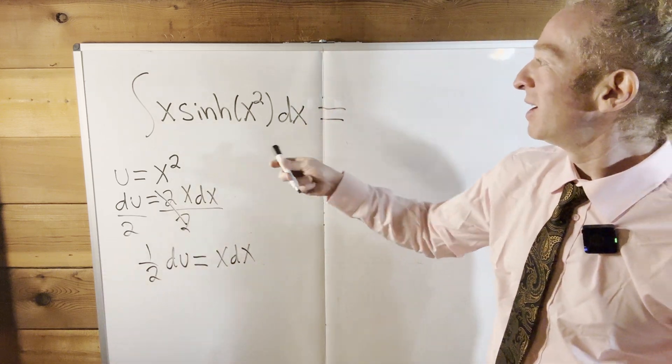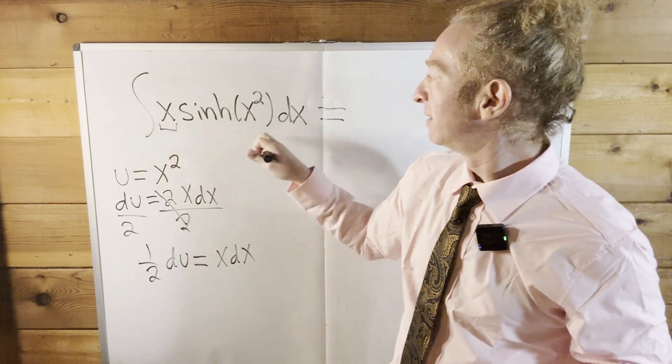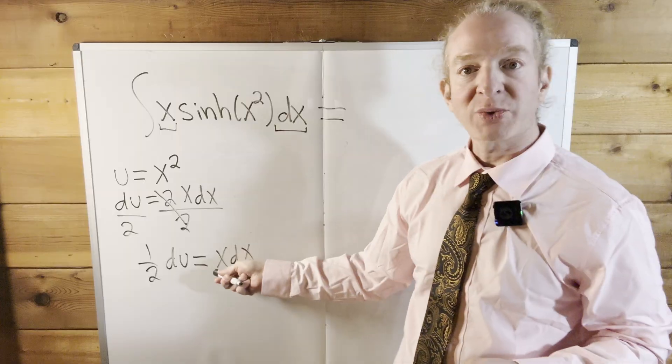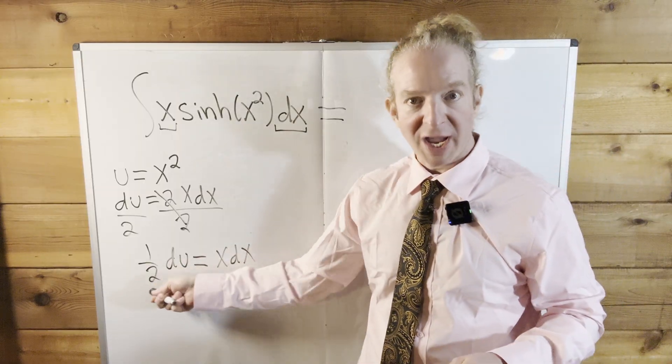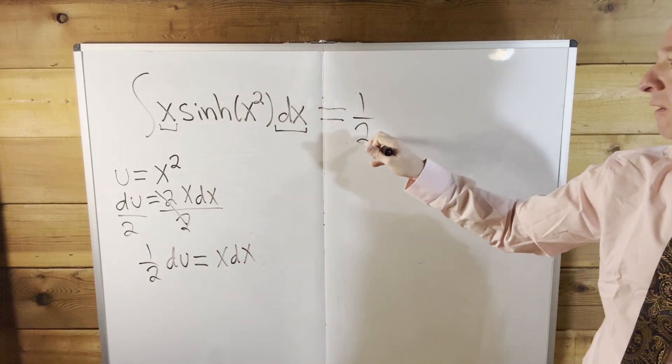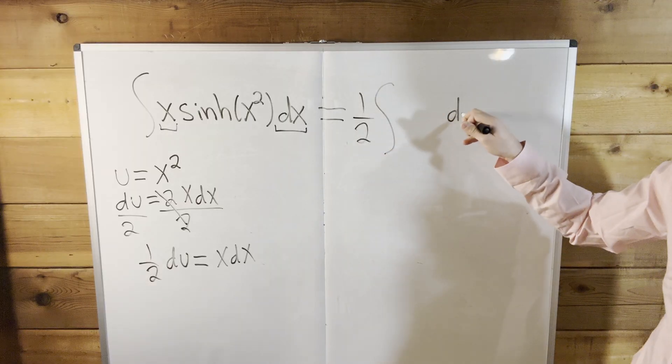So this is equal to - let's see, x dx, that's right here, right? That's going to be 1/2 du. So it's going to be 1/2 integral du.